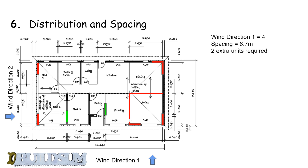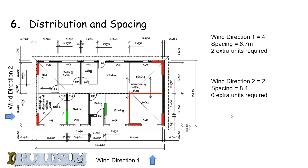For wind direction 2 the spacing was 8.4 metres, or 8.3 as I said, but the building is only 7.5 metres wide, so we don't need any extra sheets acting in that direction. We've now worked out the sheets we actually need and how many extra sheets we need because of the spacing rule. The next thing we have to look at is how we tie them down to the floor and how we connect the roof to them.